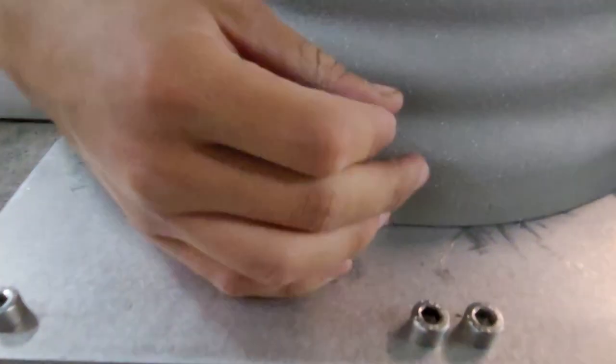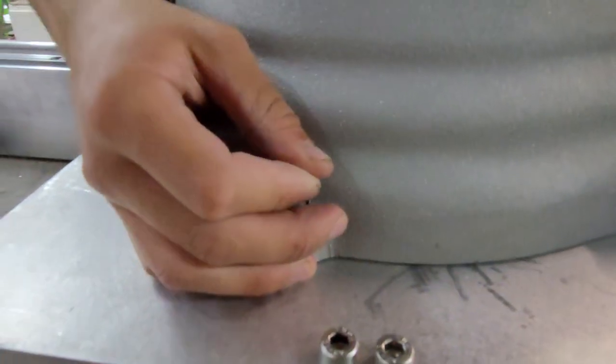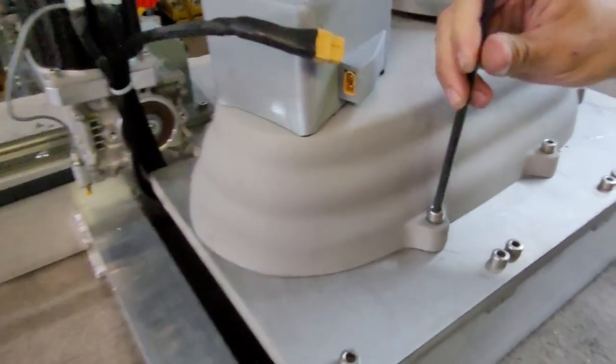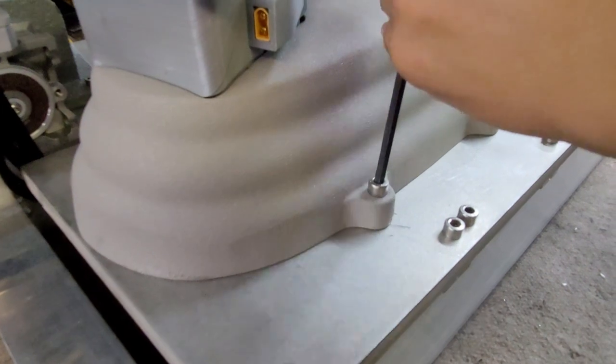Repeat the same procedure on the other side of the printer. With both pins in, you can tighten down the remaining bolts.